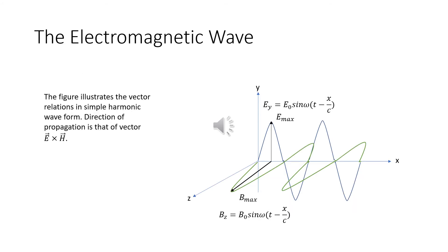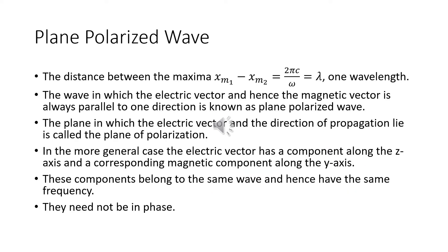This figure illustrates the vector relations in a simple harmonic waveform. The direction of propagation is that of the vector E × H. Note that B has been shown highly exaggerated — from the previous result, B is 1/c times less than E — but here it is drawn exaggerated to make the graphical representation clearer and easier to understand. The distance between the two maxima, xm1 − xm2, equals 2πc/ω, which is λ, one wavelength.